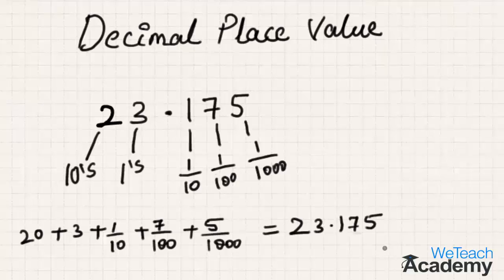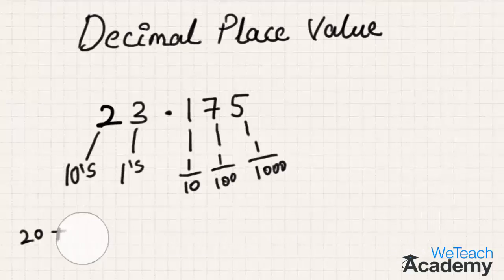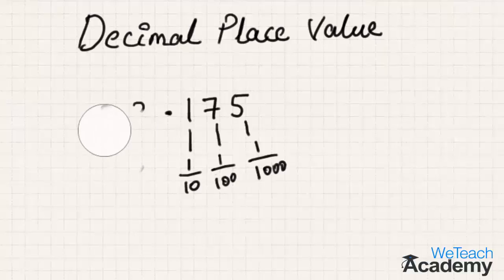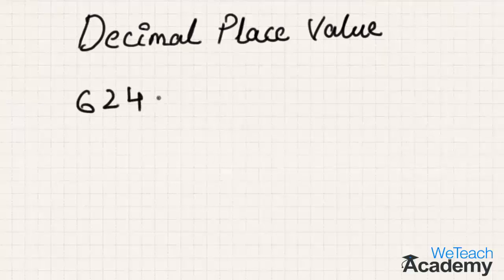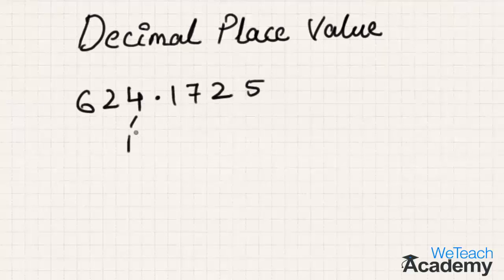Now let us consider one more example, writing down its decimal place values and then its expanded form. Let us consider the decimal number 624.1725. In the whole number part, 4 is in the units place.